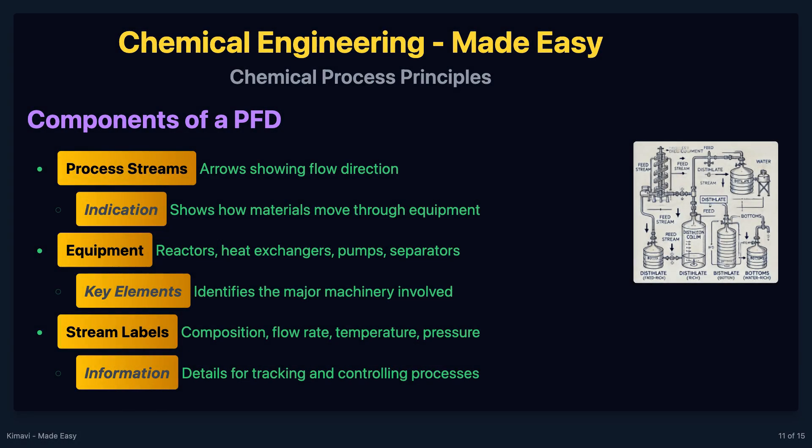A typical process flow diagram includes process streams represented by arrows showing the flow direction, equipment such as reactors, heat exchangers, pumps, and separators, and stream labels indicating the composition, flow rate, temperature, and pressure of the streams.